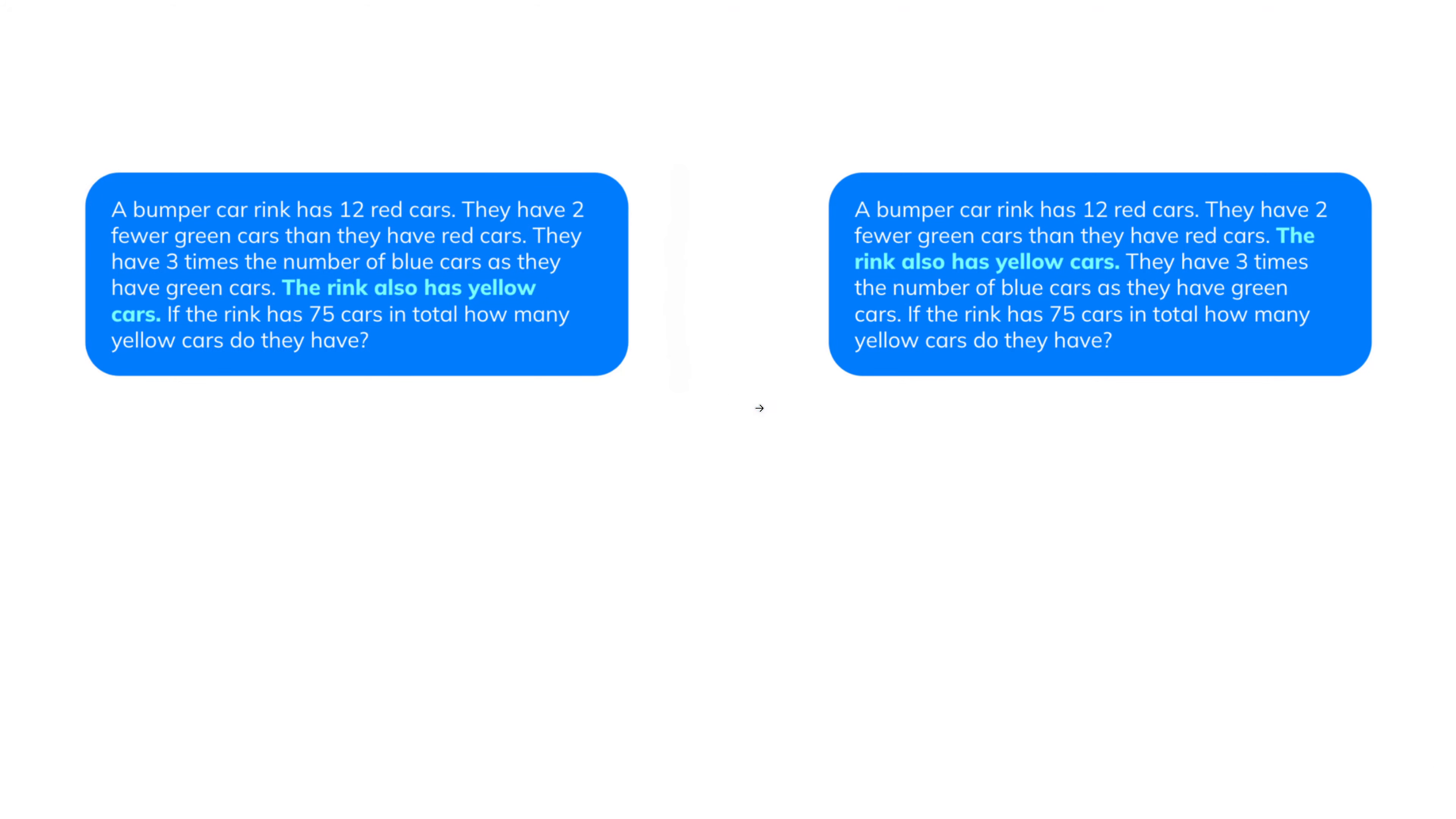Two simple texts. Have a look at this. A bumper car ring has 12 red cars. They have two fewer green cars than they have red cars. They have three times the number of blue cars as they have green cars. And now comes the sentence: the ring also has yellow cars. And so if the ring has 75 cars in total, how many yellow cars do they have? This is a simple logical mathematical reasoning for your LLM.